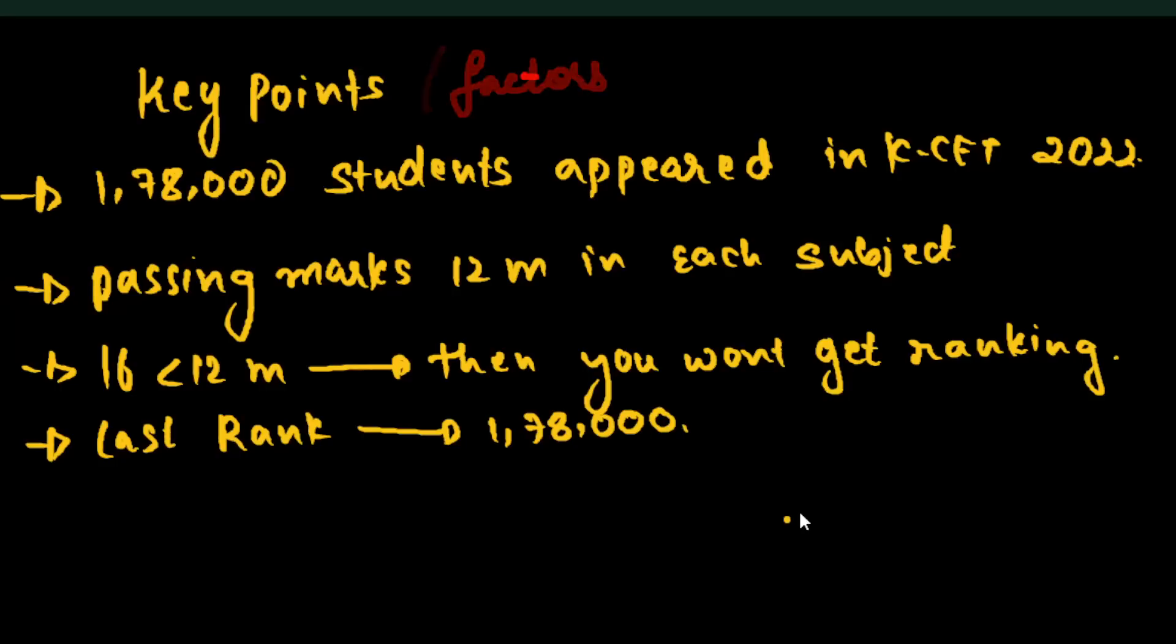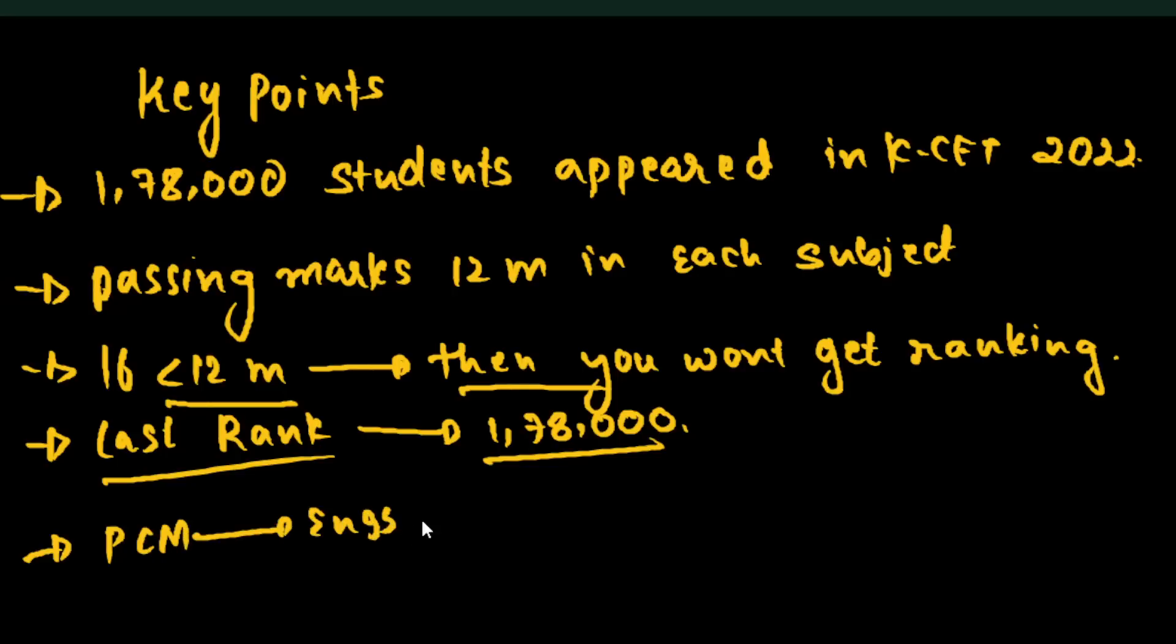First factor: 1 lakh 78,000 students appeared in K-CET 2022. The passing marks is 12 marks in each subject. If you got less than 12 marks, then you won't get any ranking. The last rank will be 1,38,000.